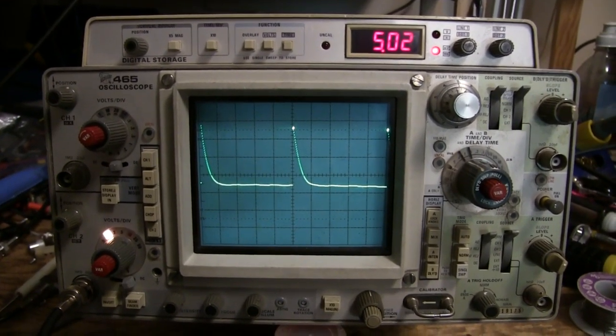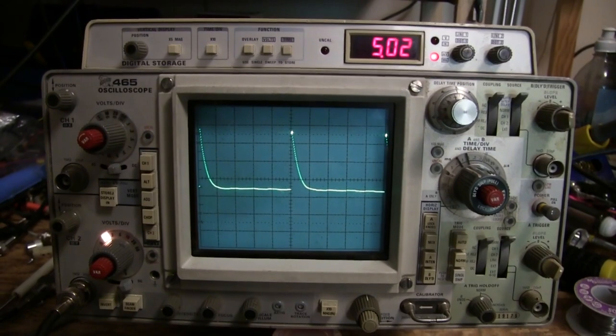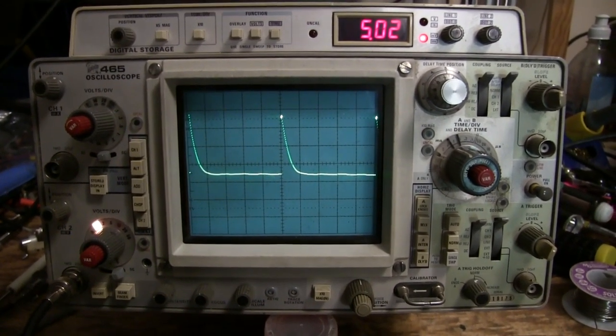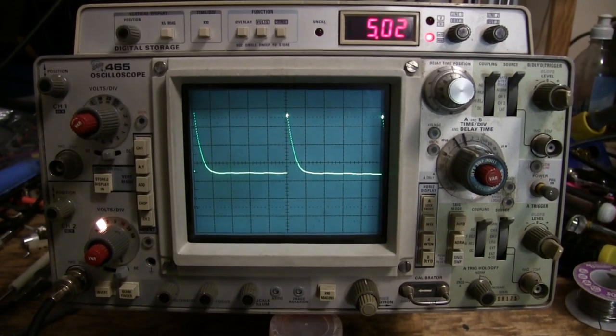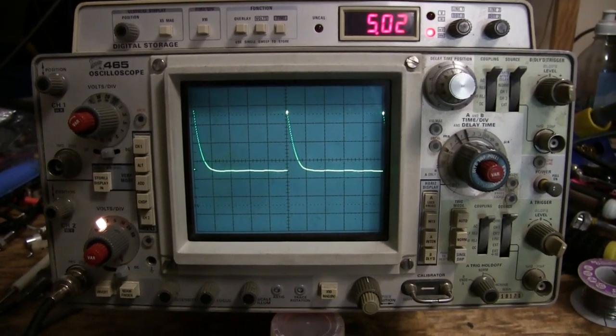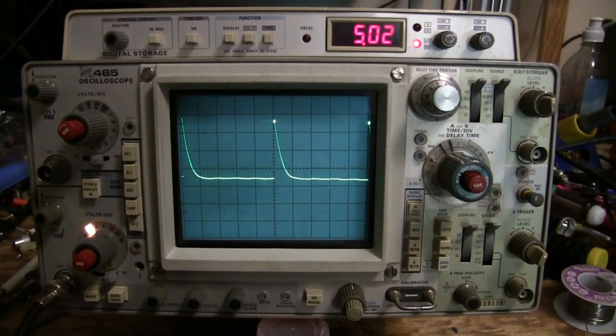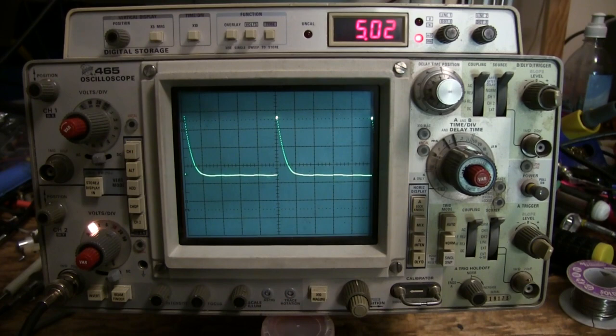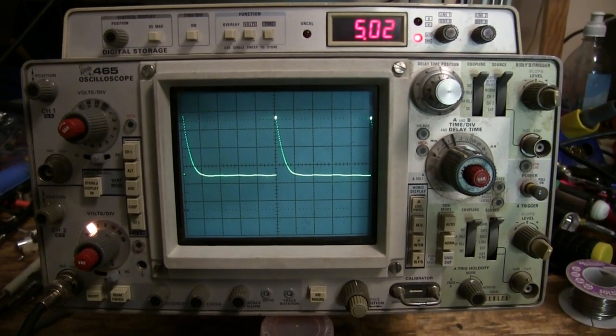It might be a forerunner to the 468. The 468 was based on the 465B, an improved 465. Whereas this mod, the 465 mod UC, is built on just a stock 465.